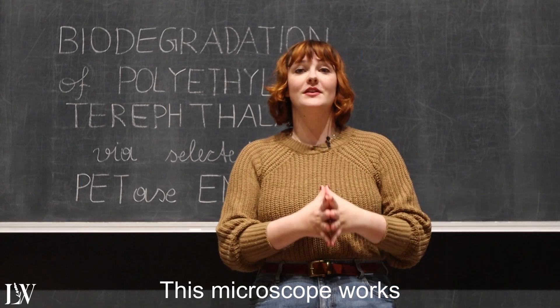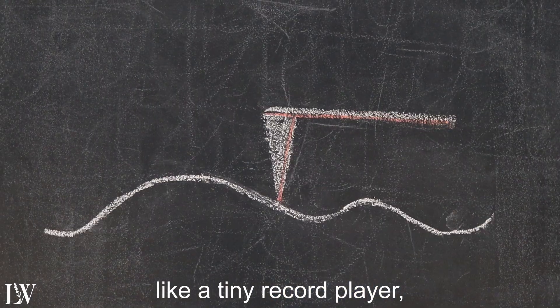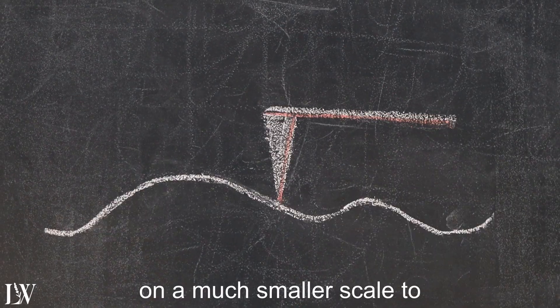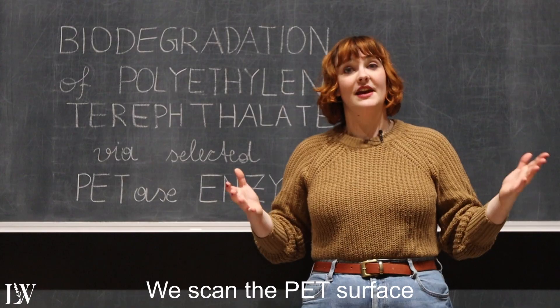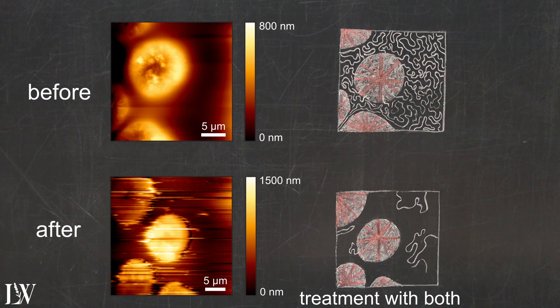This microscope works like a tiny record player, except instead of music, it scans the surface on a much smaller scale to create an image of the surface. We scan the PET surface before and after enzyme treatment with both the natural wild type and the engineered fast petase.